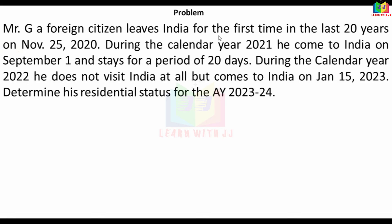Mr. G, a foreign citizen, leaves India for the first time in the last 20 years on November 25, 2020. During calendar year 2021, he comes to India on September 1st and stays for a period of 20 days. During calendar year 2022, he does not visit India at all, but comes to India on January 15, 2023. Determine his residential status for assessment year 23-24.